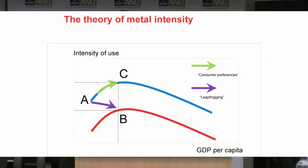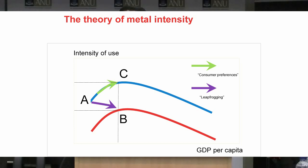They changed their preferences, they shifted towards more durable goods in their consumption baskets. The mental intensity of an economy rises. The alternative school was the leapfrogging school, which was very optimistic about technological change. They argued that consumers can do what they like; the power of technological change enables economies to leap onto lower intensity of use curves, and it's that dynamic which actually drives reduced metal intensity through time, as opposed to increased metal intensity, as the consumer preferences school contended.